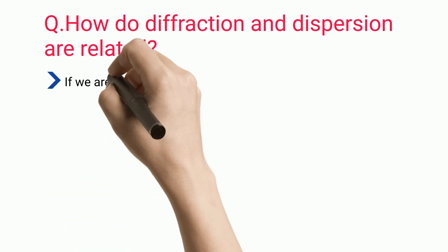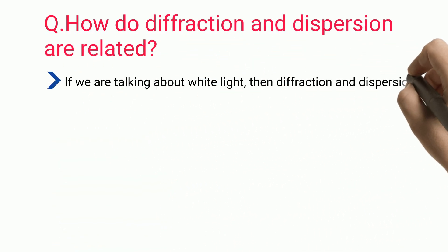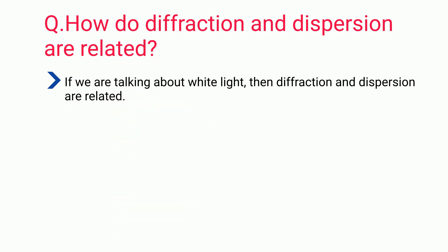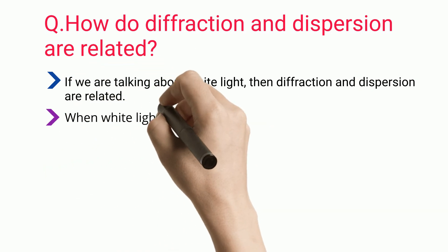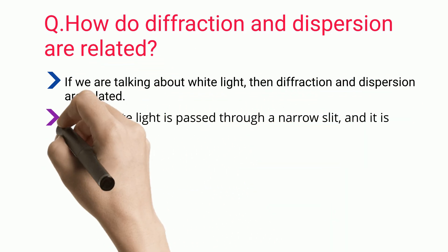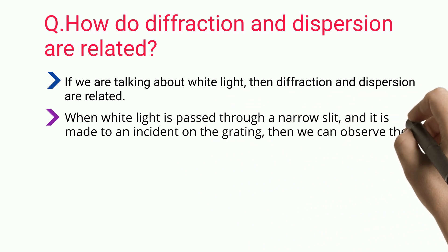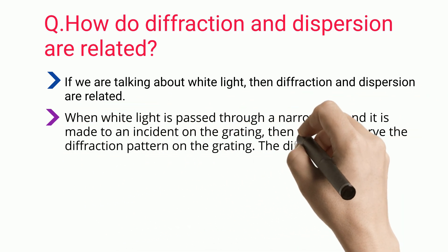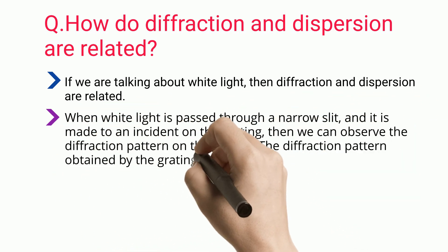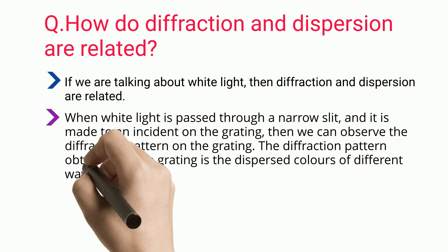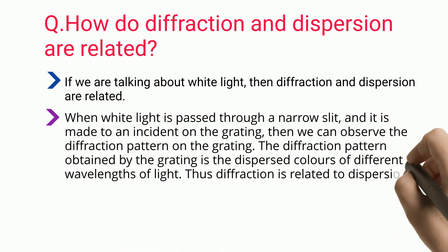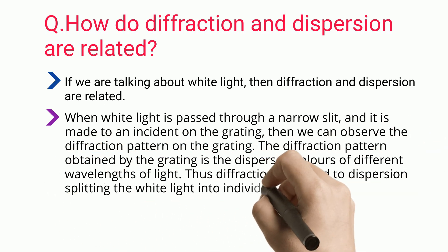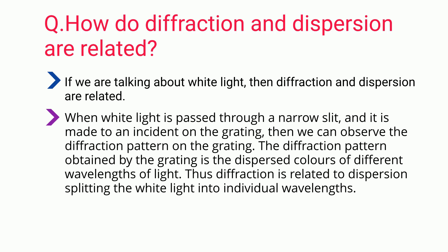How are diffraction and dispersion related? If we are talking about white light, diffraction and dispersion are related. When white light is passed through a narrow slit and made incident on a grating, we observe a diffraction pattern. The diffraction pattern obtained by the grating is the dispersed colors of different wavelengths, thus diffraction is related to dispersion in splitting white light into individual wavelengths.